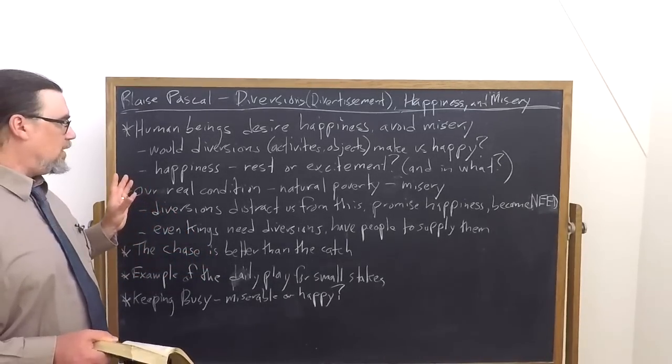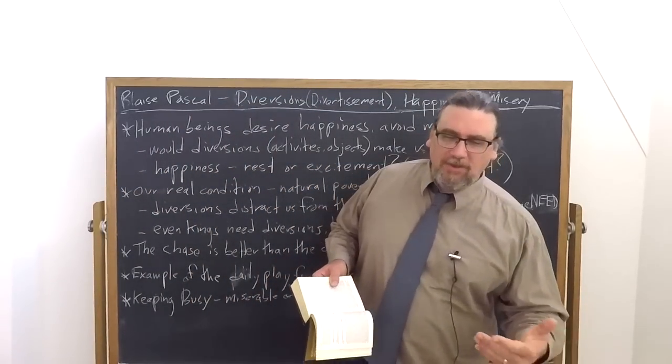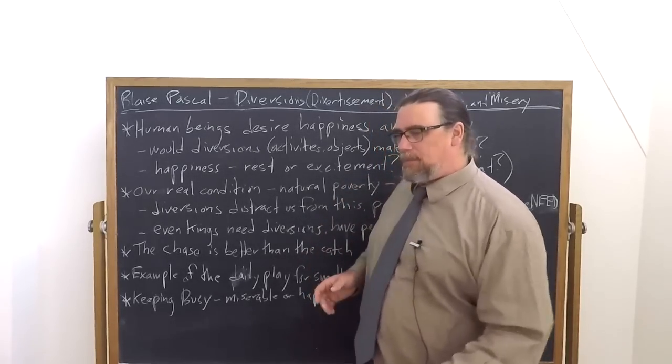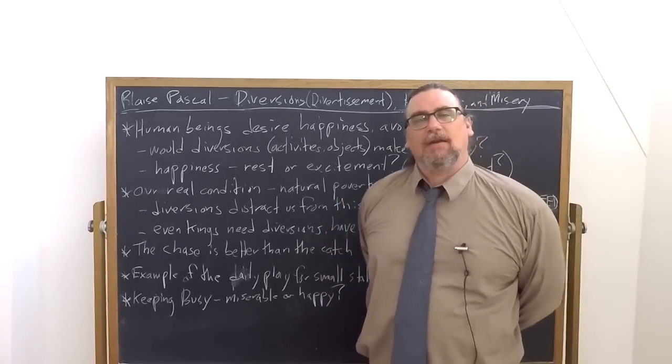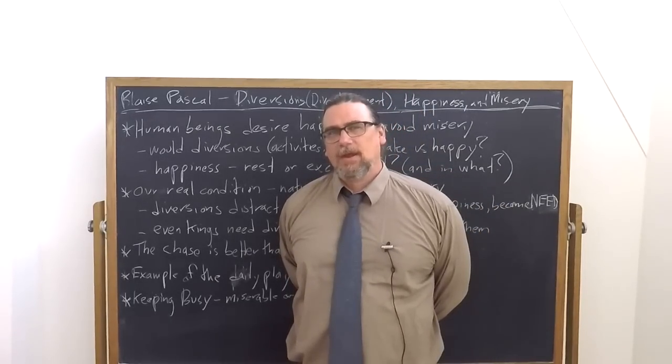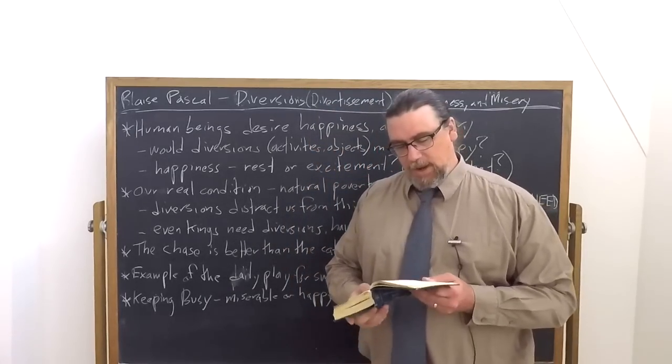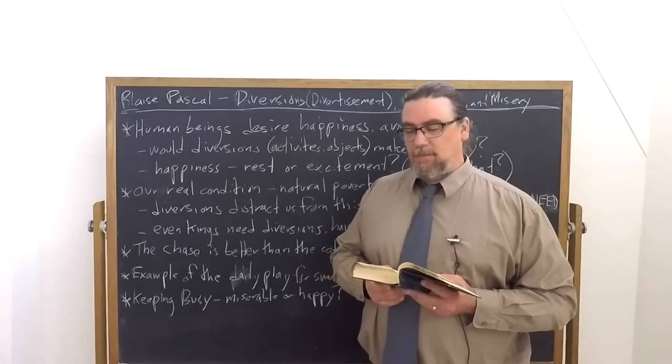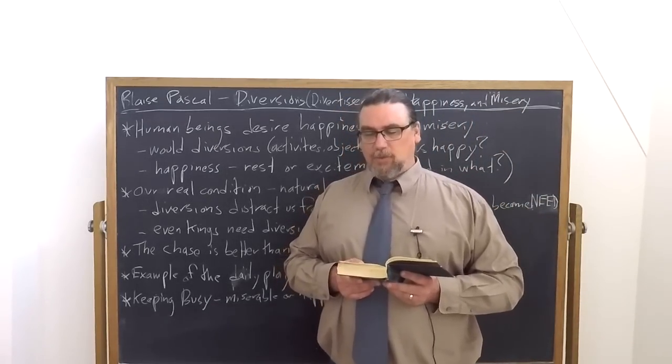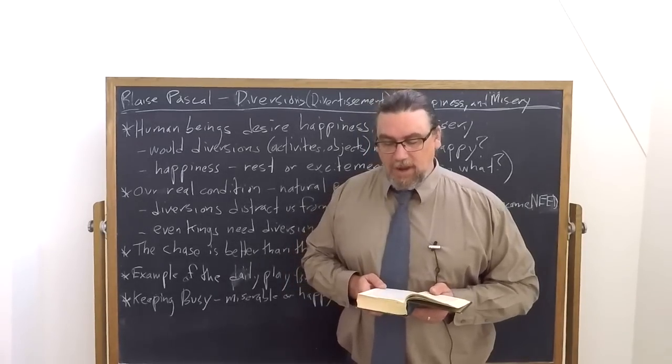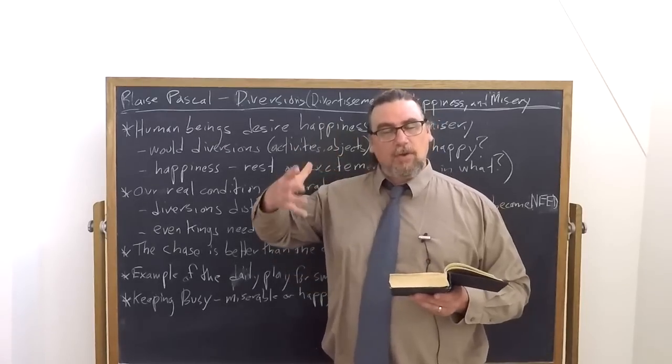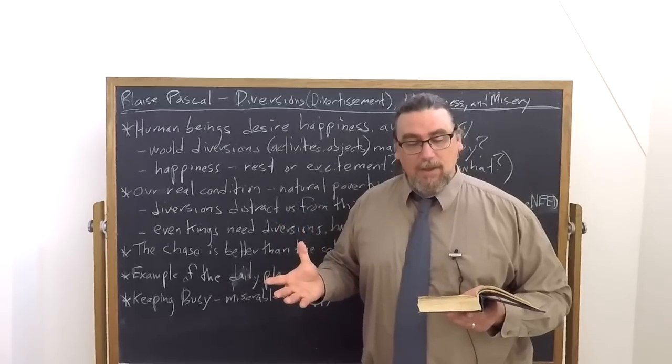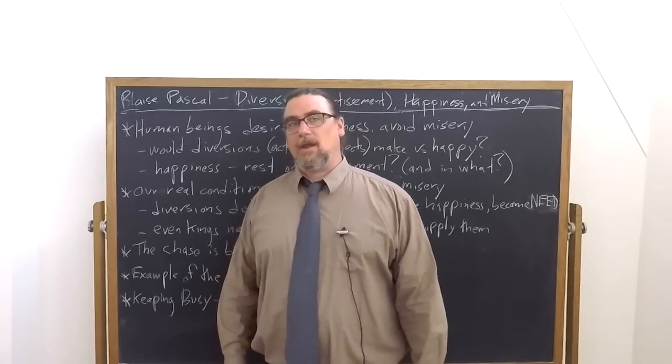Another thing that he says is, and this is a very interesting point and we don't have a lot of kings around these days, but you can think about all the other people who have some degree of power. He says the people who you think are enjoying the best life, they need people to provide them with diversions. So he says royalty is the finest position in the world. When we imagine a king attended by every pleasure he can feel, if he be without diversion and be left to consider and reflect on what he is, this feeble happiness will not sustain him. He will necessarily fall into foreboding of dangers of revolutions, which may happen. Finally, of death and inevitable disease.